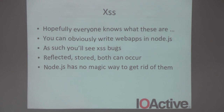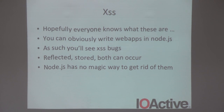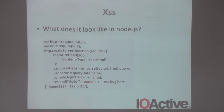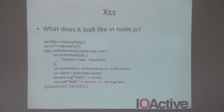Cross-site scripting: Node.js, being a JavaScript environment for writing web apps, will have tons of XSS bugs. If you're auditing Node.js applications, you will find cross-site scripting bugs — both reflected and stored. Node.js has no magic API to easily get rid of them. Going back to the simple create-server example, if you send data back with an echo of a name parameter, that's a classic reflective XSS bug.